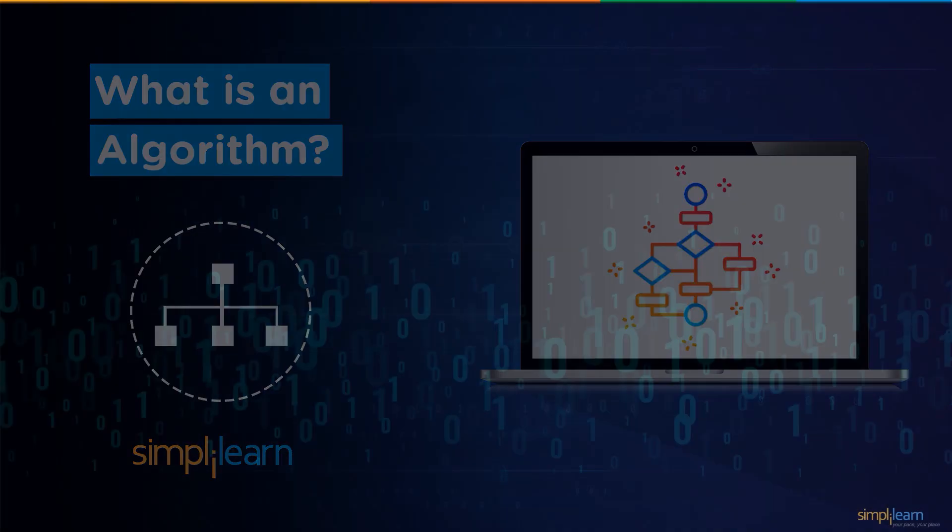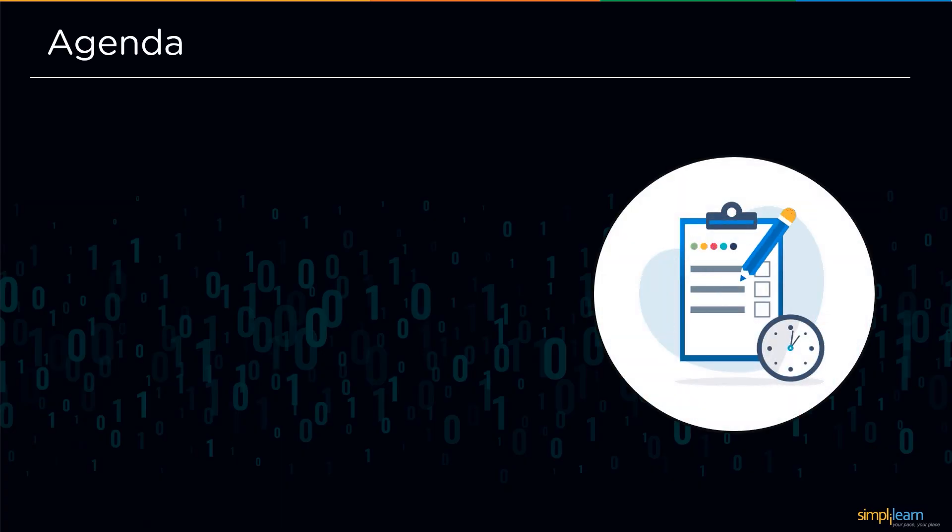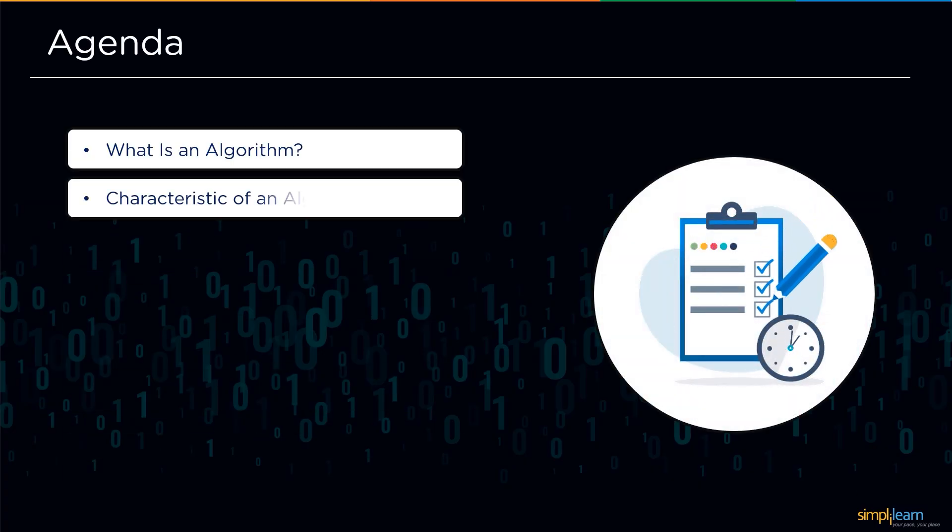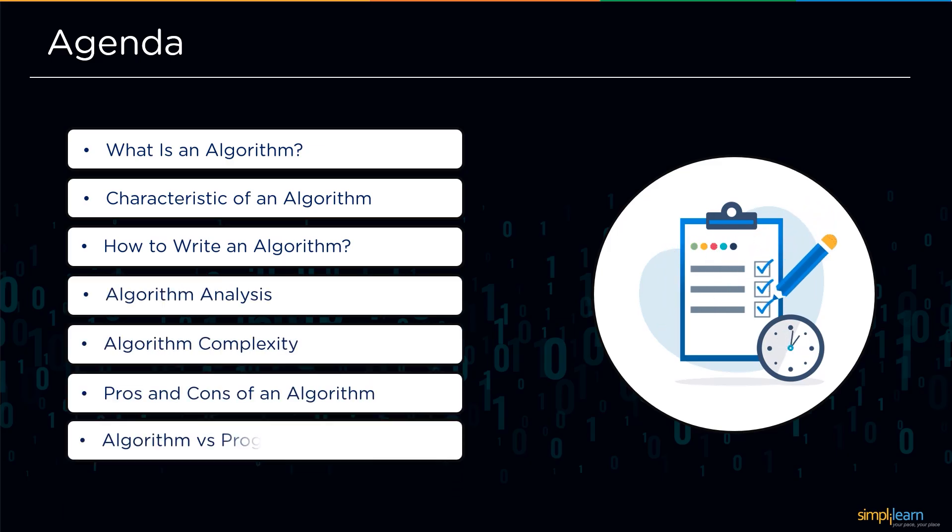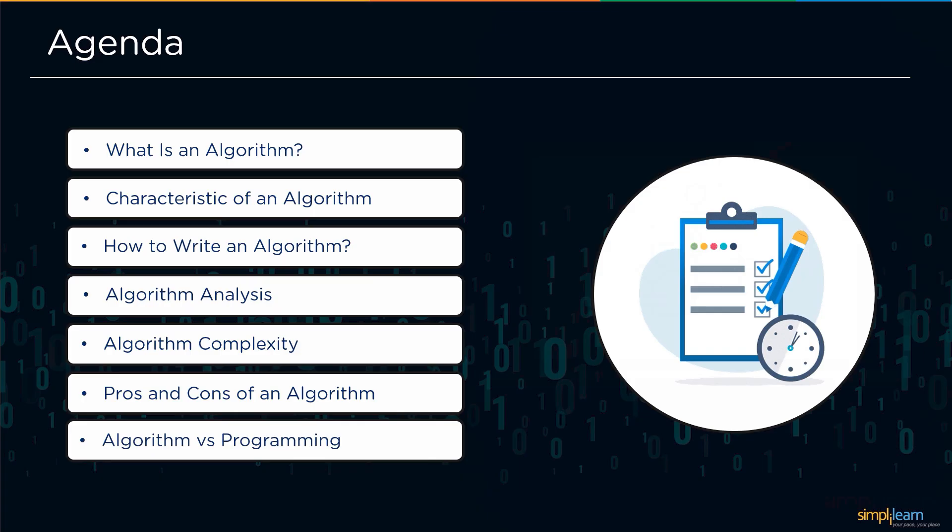Now without further ado, let's get started with the agenda for today's session. First we will get started with what is an algorithm, followed by the characteristics of algorithm. Next we will learn how to write an algorithm. Moving ahead we will look at algorithm analysis and algorithm complexities. After that we will discuss the advantages and disadvantages of algorithms, and finally we will see some differences between algorithms and programming.